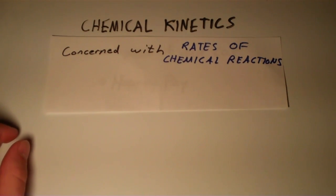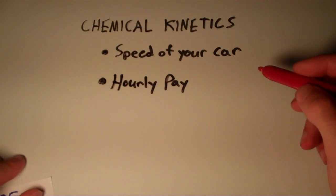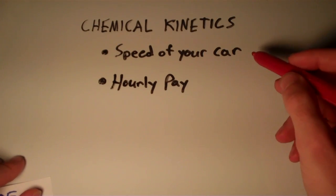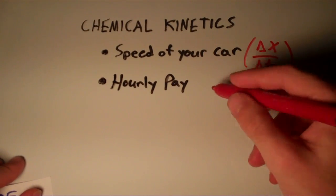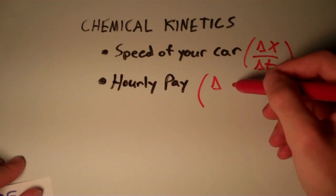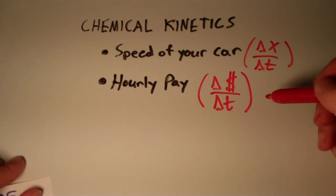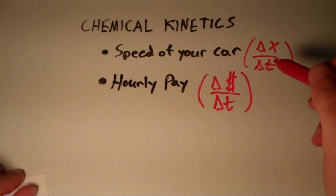When we talk about a rate of a chemical reaction, we're talking about how fast the reaction occurs, and as a result we usually end up dividing by time. These two examples here—the speed of your car and your hourly pay—those are both rates because you're dividing a change in some quantity per unit time. In the case of the speed of the car, you have a displacement Δx and you're dividing that by time. In the case of your hourly pay, you're taking the change in the amount of money you make over unit of time, the hour usually. So these are just two examples of rates to show what all rates have in common.